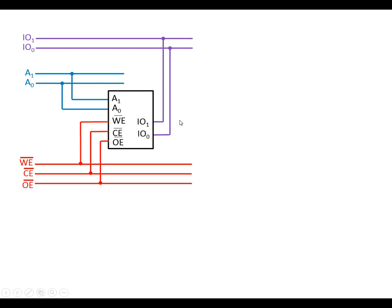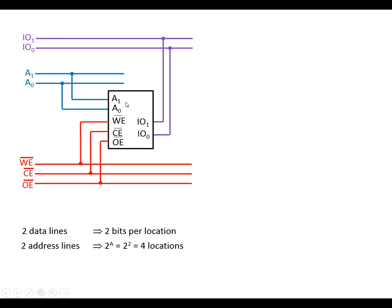This is the basic memory module. We can see it has two data lines — input and output pins — so data can go into or out of the memory. This means two bits can be stored in each location. We also have two address lines, giving us four address combinations: 00, 01, 10, 11. So there are four locations, each storing two bits of data, giving us eight memory cells total.